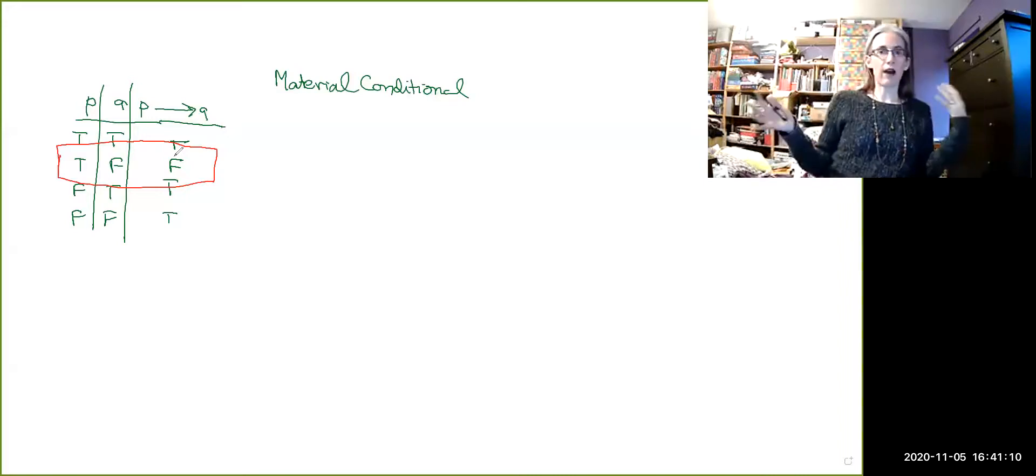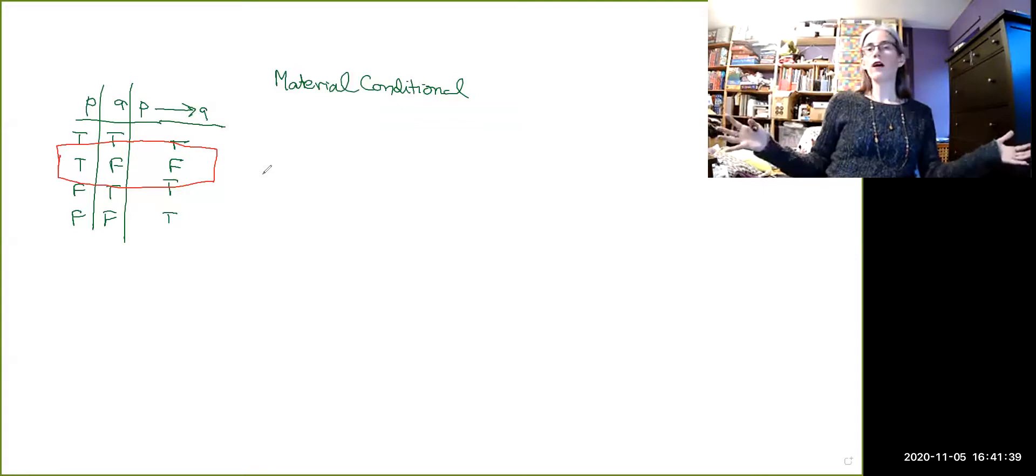We can always make more assumptions later. Once we have an understanding of how counterfactual conditionals work, we can then build this on top of the material conditional. But without making any assumptions whatsoever about what type of conditional we have, the material conditional allows us to capture the intuition that something has obviously gone wrong in the case where you have a true antecedent and a false consequence.